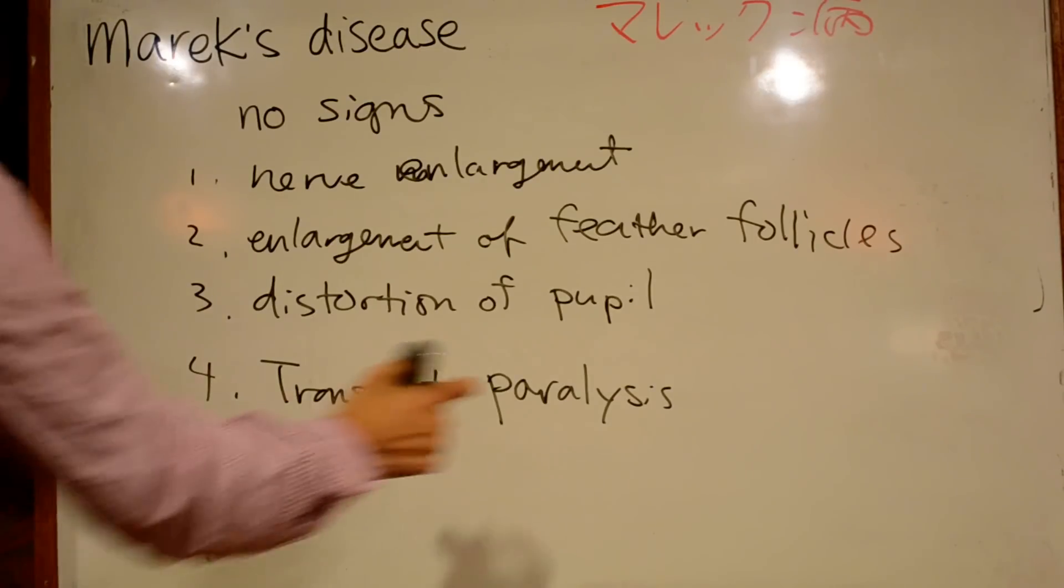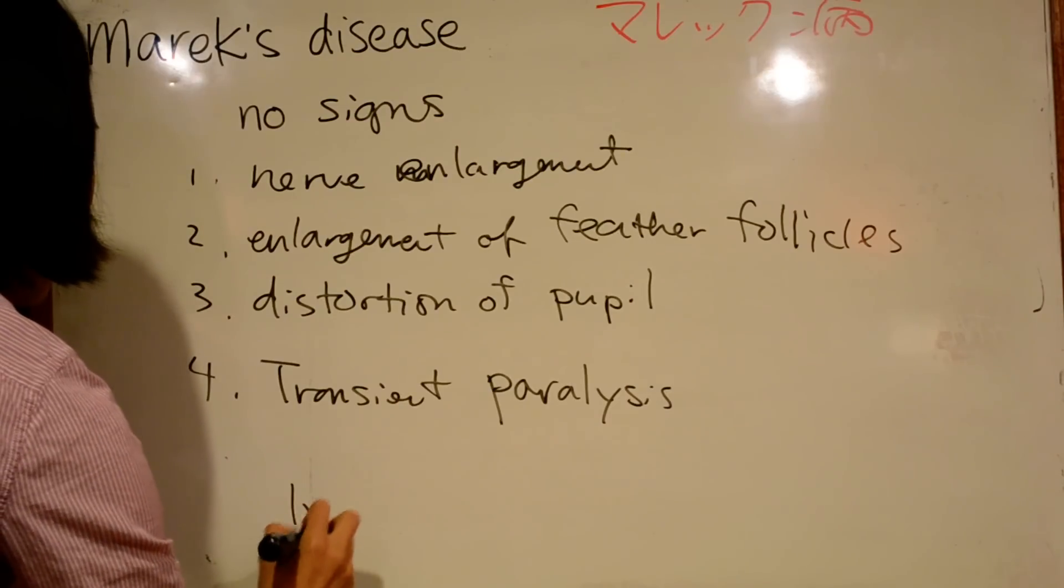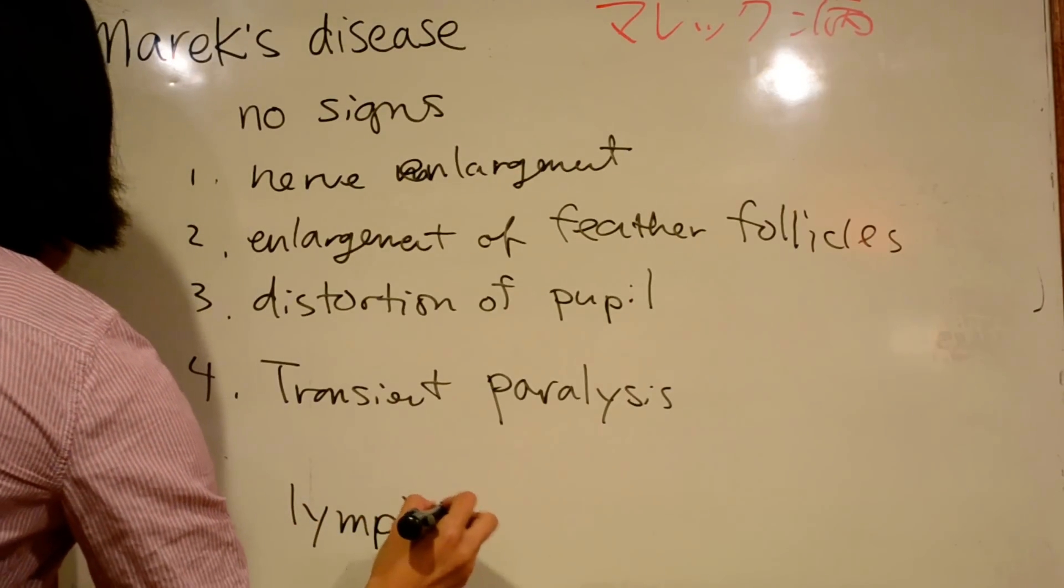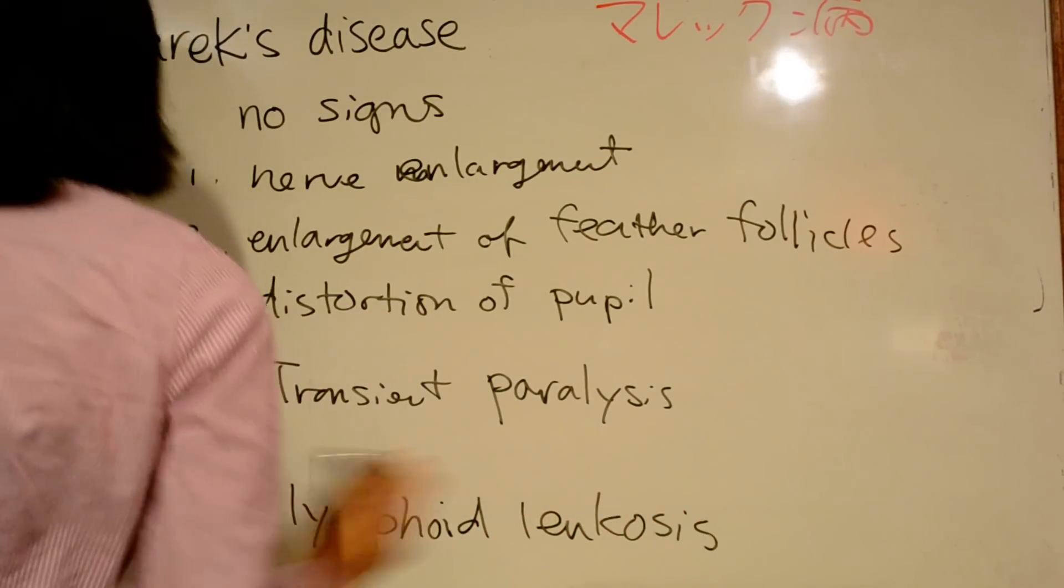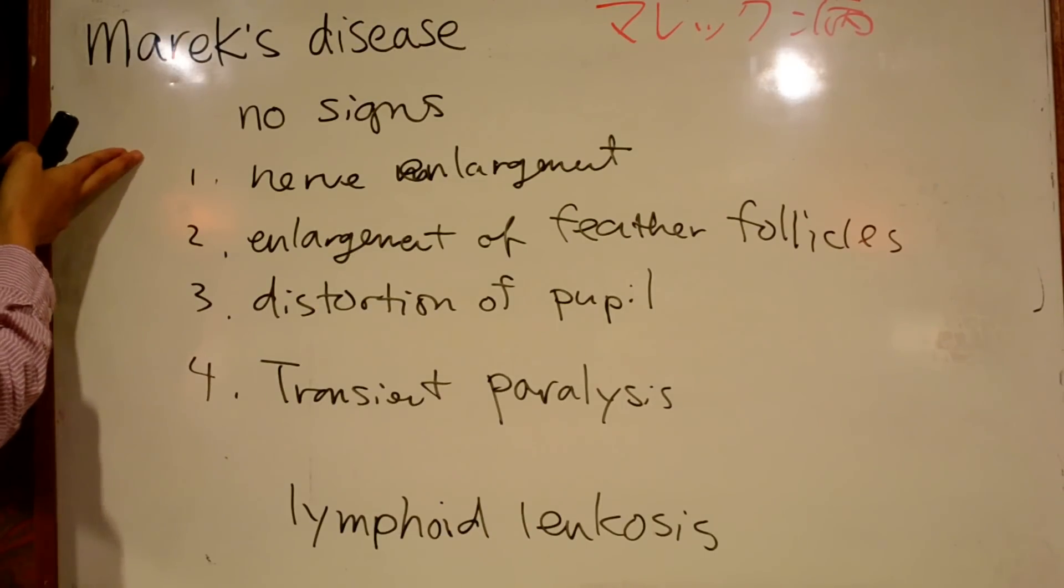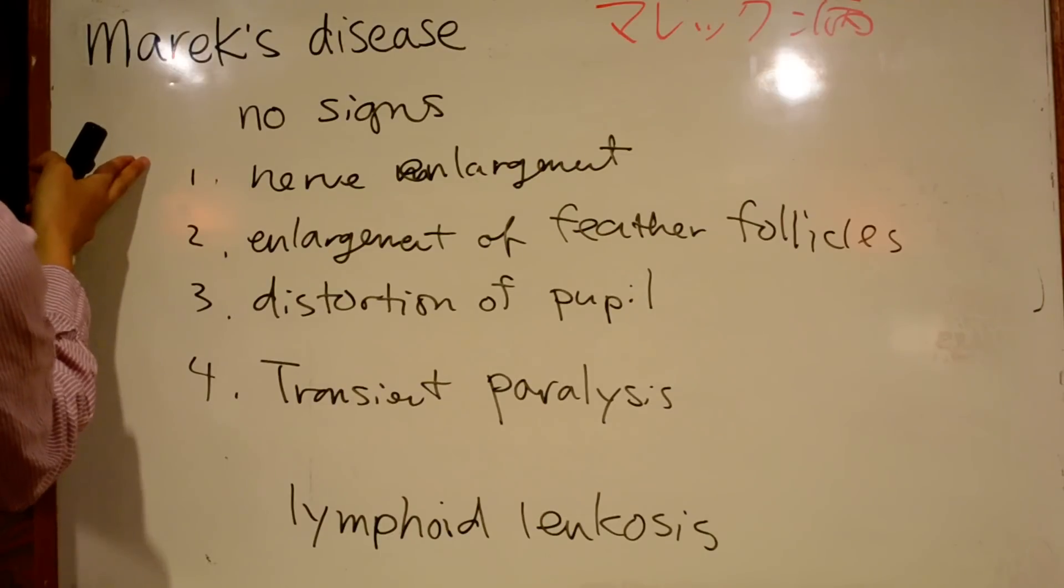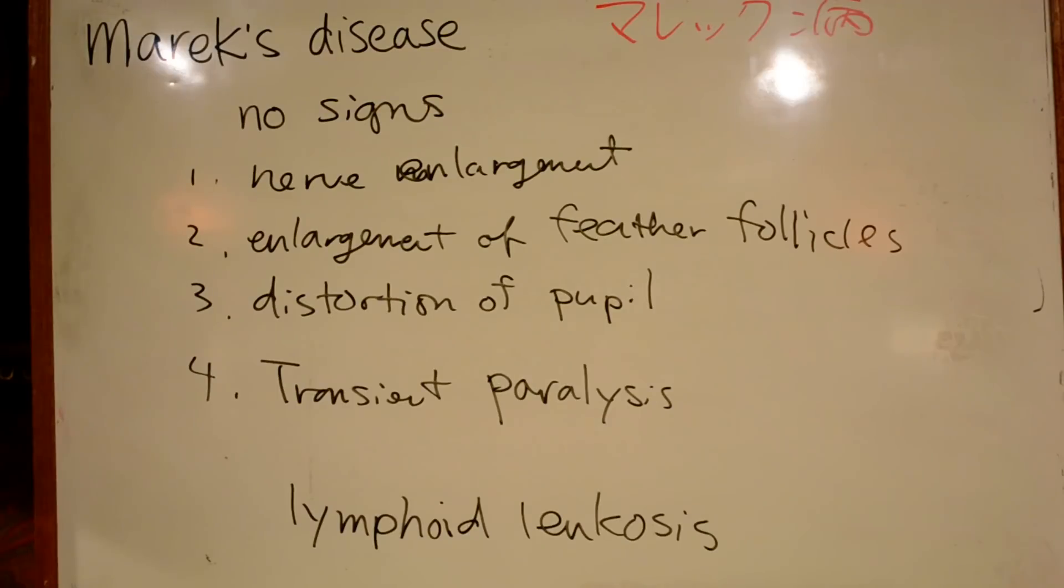Transient paralysis with one leg forward and one leg back may occur. This disease may be confused with lymphoid leucosis. So this was a quick review of Marek's disease.